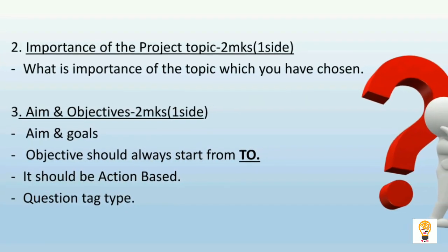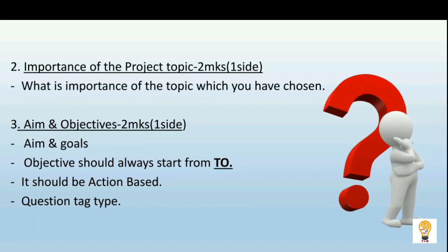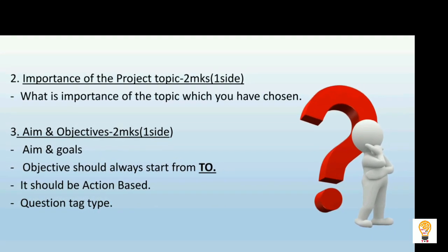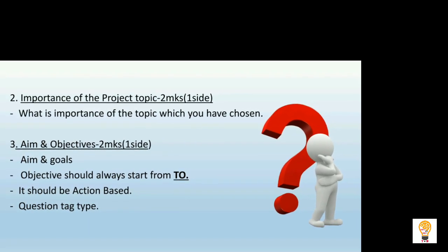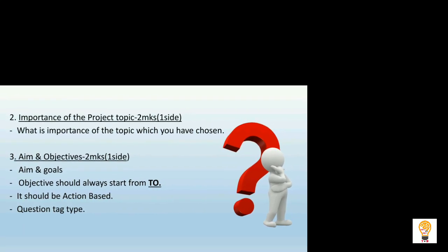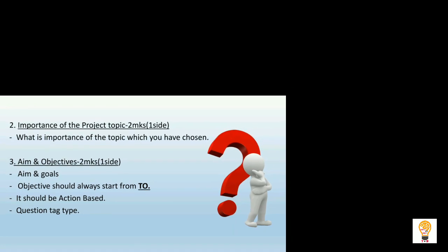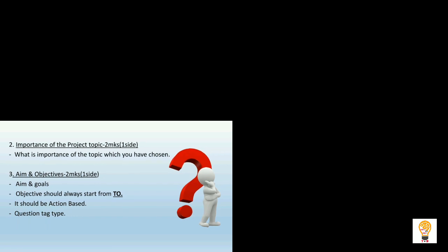The second component is importance of the project — what is the importance of the topic you have chosen. It consists of 2 marks and should be written on 1 page, 1 side. The third component is aims and objectives, which also carries 2 marks and should be written on 1 side. It should have aims and goals; objectives should always start from verbs, be action based and question type.